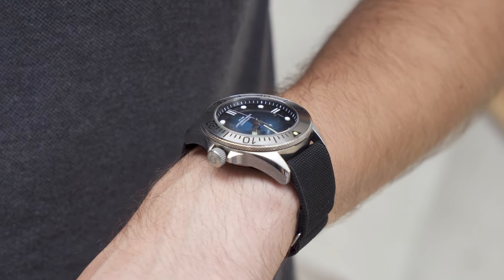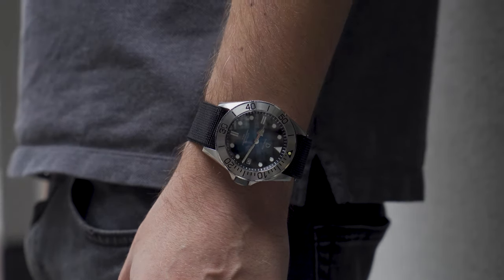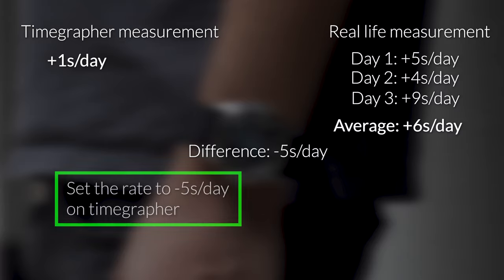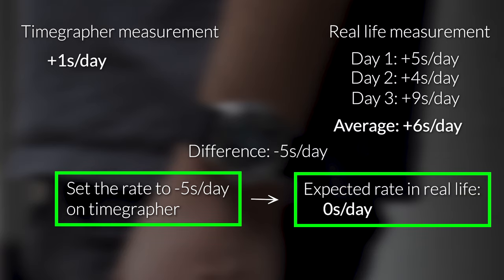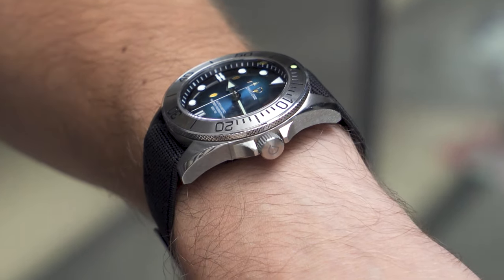In fact, I sometimes do this to compare the real world accuracy with the reading I get from the time grapher. I'll take the average rate from the real life measurements, then subtract it from the time grapher measurement. I'll then adjust for the difference once again on the time grapher. This way, I can get my watch to be even more accurate for my lifestyle.